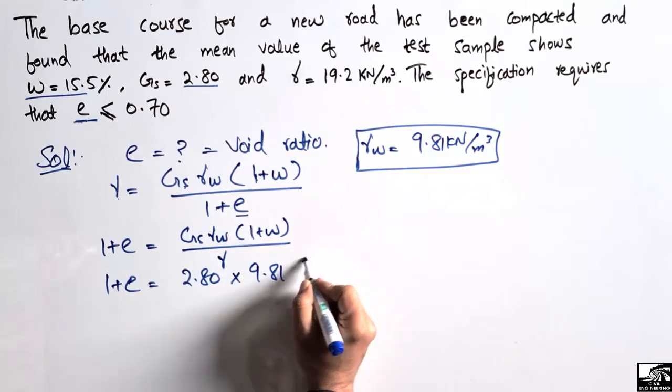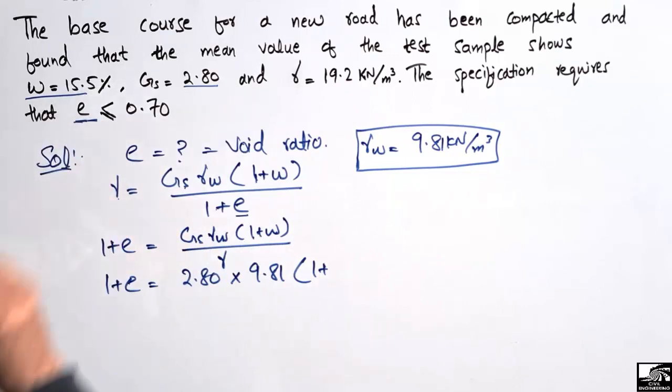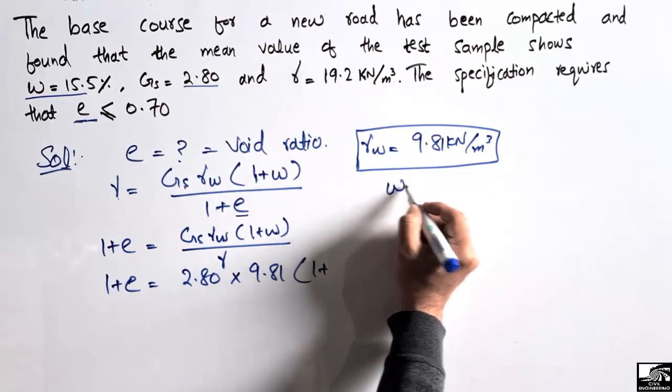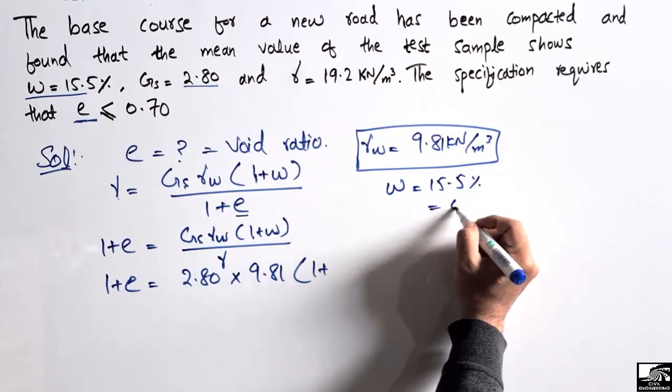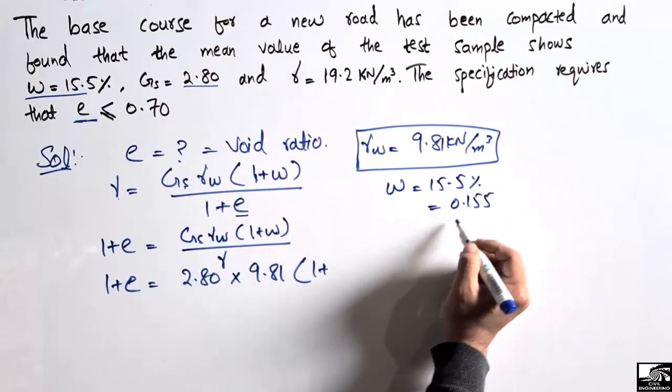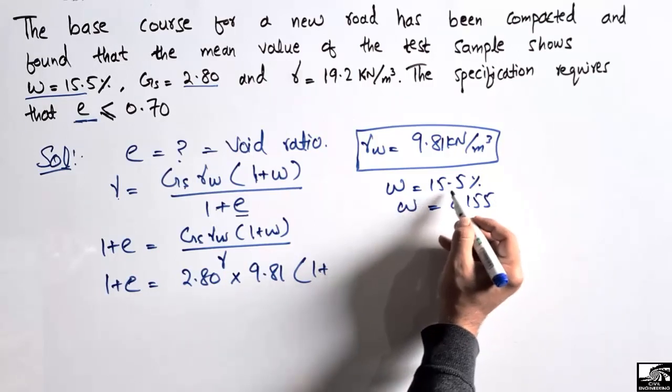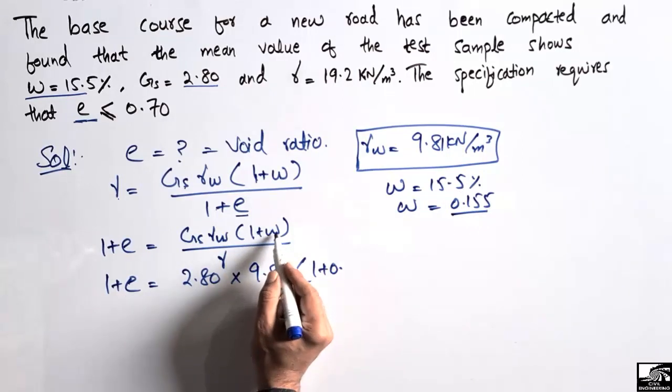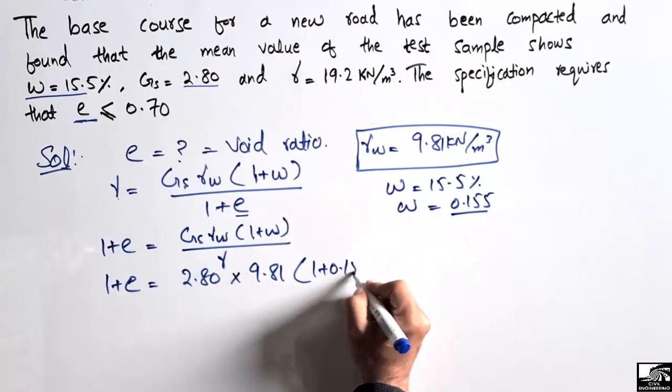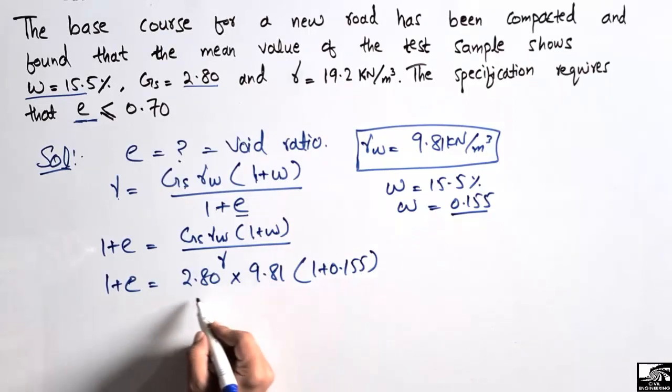Now plugging the values: Gs is 2.80 multiplying with γw, which is the unit weight of water, multiplying with (1 plus water content is 15.5%). But we have to convert this 15.5% into decimal, it becomes 0.155. We divide 15.5 by 100 so we get 0.155 because the water content is always in decimal, not in percentage.